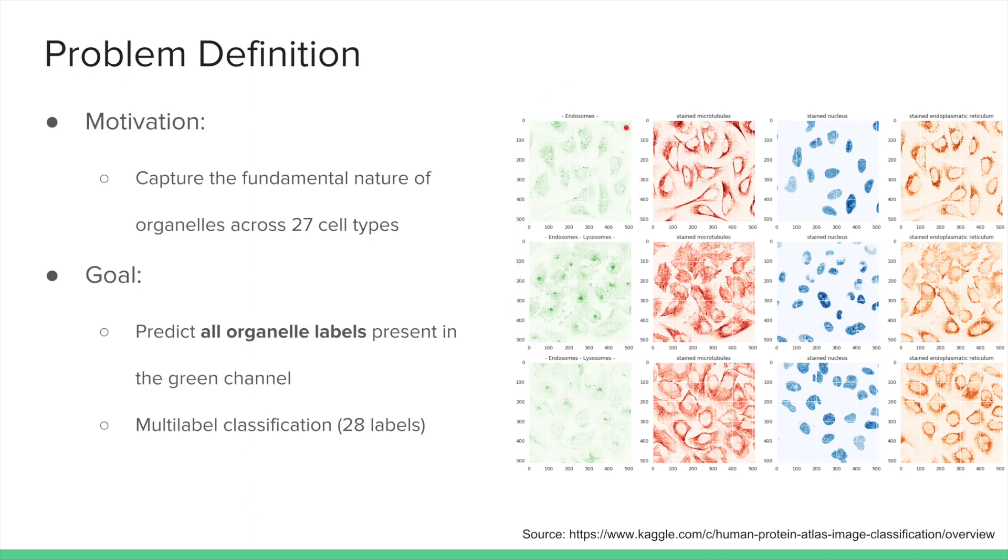This problem is challenging due to several factors. First, there are 28 possible labels to assign to a single query image. Each image can contain multiple labels.